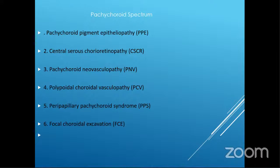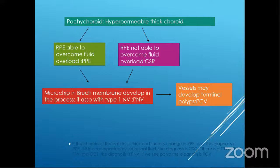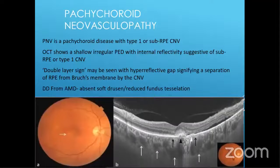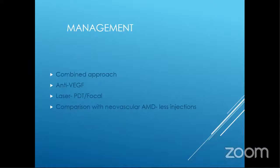He was diagnosed with pachycoroid neovasculopathy with a pachycoroid neovascular membrane, treated with combined laser and intravitreal anti-VEGF injection. Regarding the pachycoroid spectrum: pachycoroid neovasculopathy typically has a double layer sign due to the CNVM, and can be differentiated from neovascular AMD by the absence of soft drusen and reduced fundus tessellation. It responds well to anti-VEGF injection. If associated CNV complex is foveal or juxtafoveal, PDT is helpful; if away from the fovea, focal laser is helpful. Compared to neovascular AMD, it may require fewer injections.